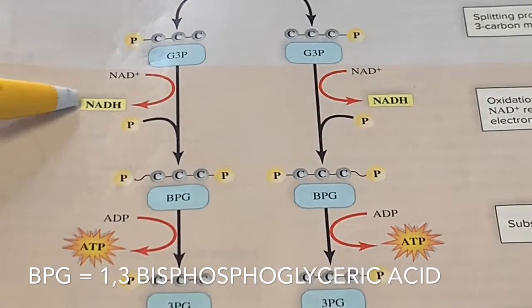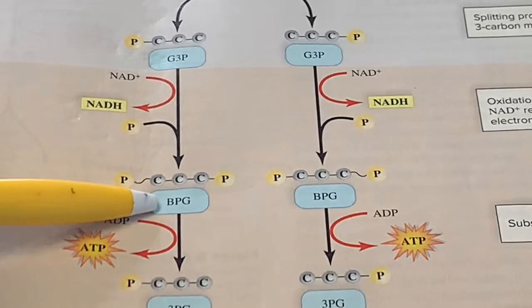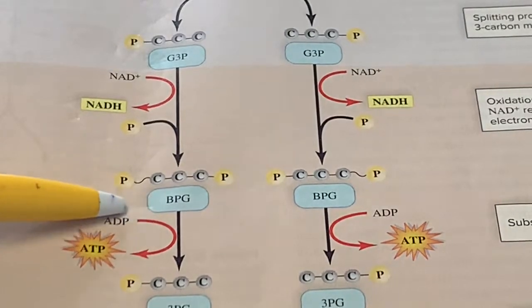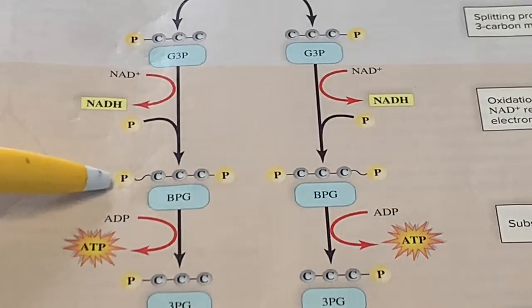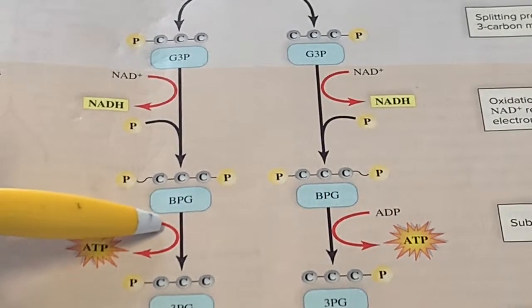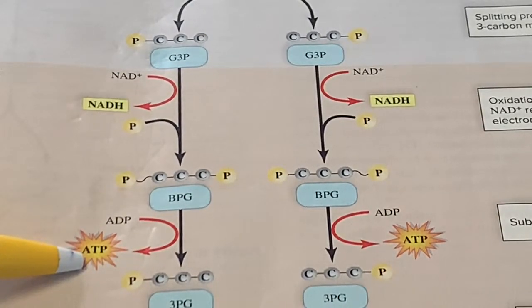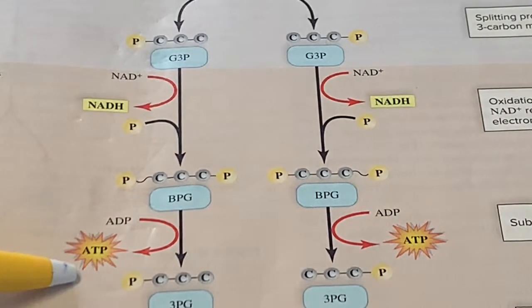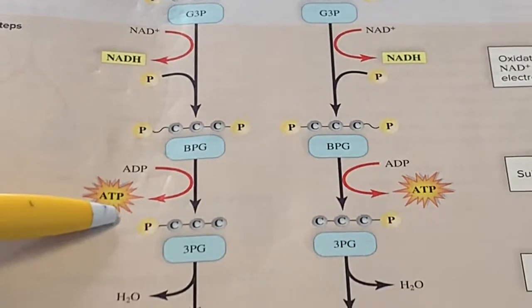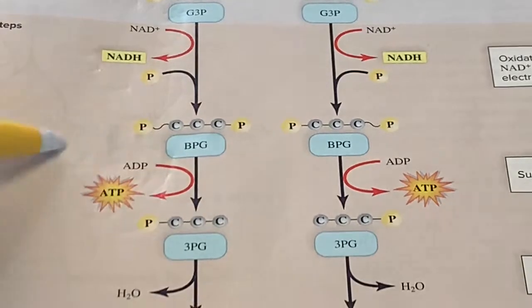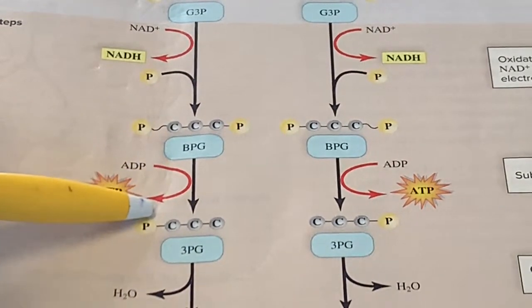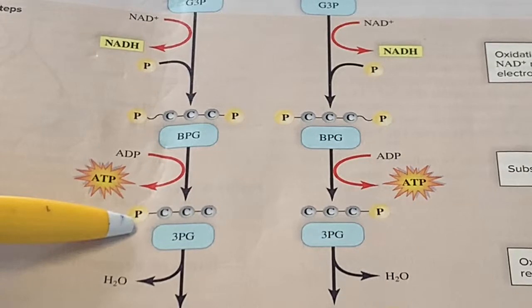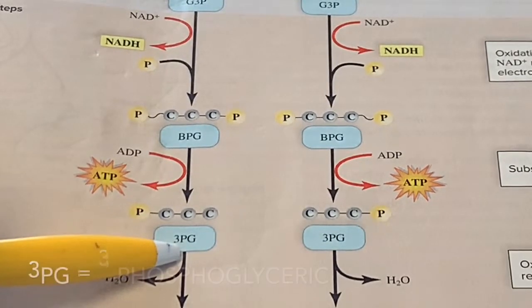BPG stands for Baby Pirate Gang. They're initiating into the Baby Pirate Gang, and it took a whole lot of energy. But they put a lot of work in — that's how you're going to remember this is the first ATP harvest step. Remember, we took two ATPs to start glycolysis, but we just got two back with this step. They went from the Baby Pirate Gang, put in work and energy, and now the main pirate only chose three people to be in the pirate gang — so 3PG is a three pirate gang.